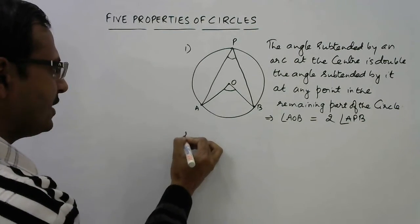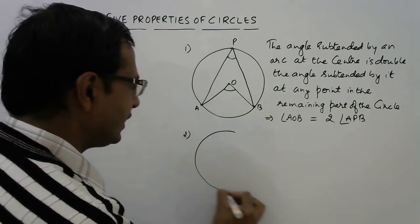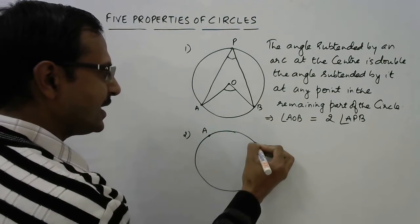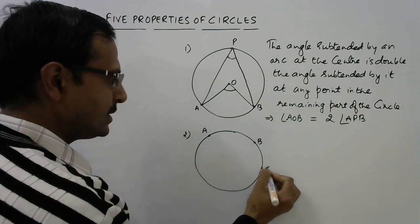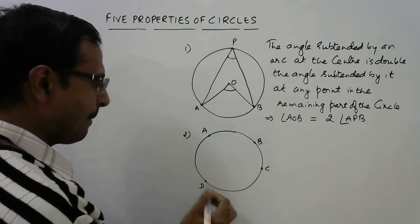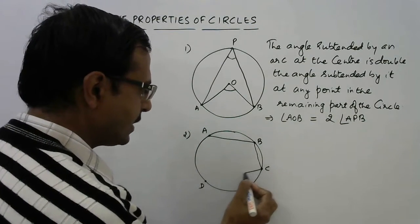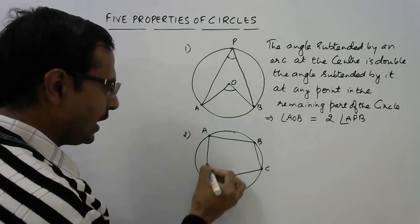Let's have the second property. Again we have a circle and we take four points on its circumference A, B, C, and D, and join them in order AB, BC, CD, and DA.